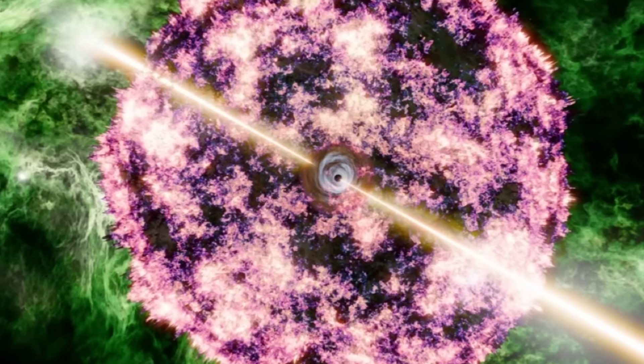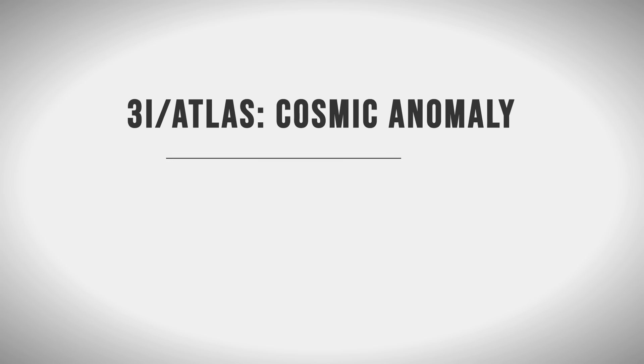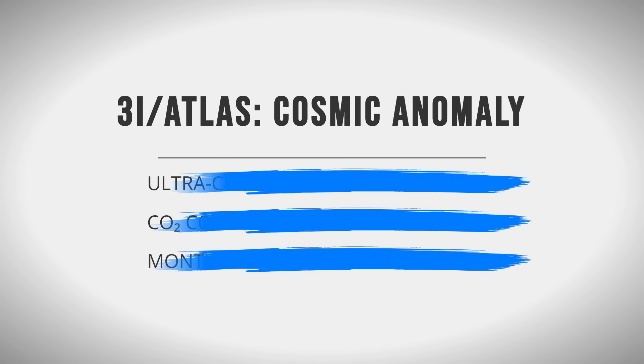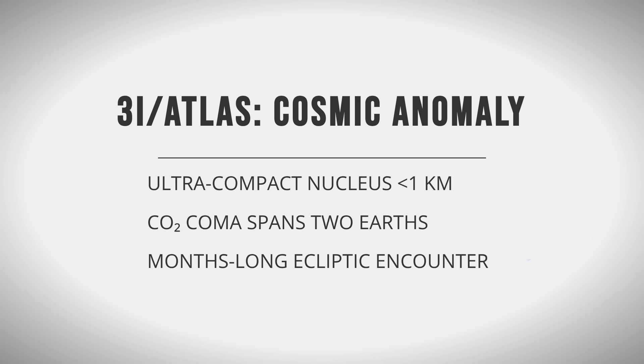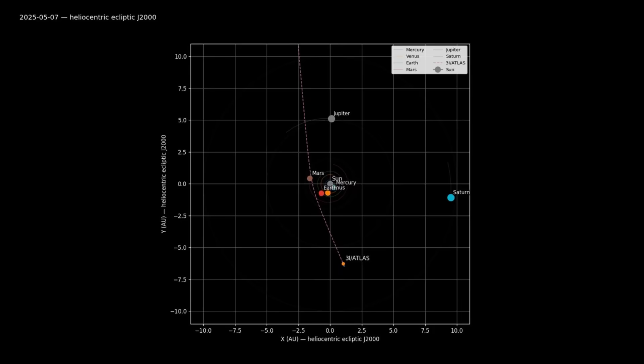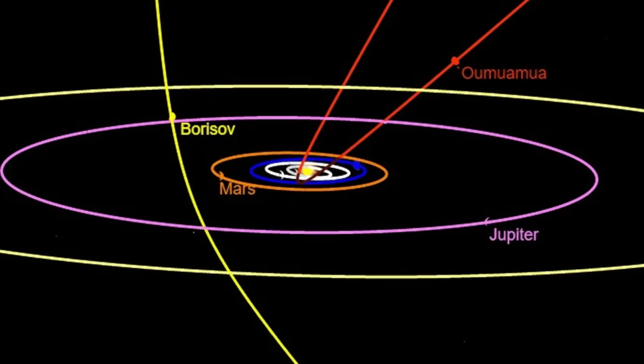But here's what has scientists stunned. Its comet core is less than a kilometer wide, surrounded by a colossal carbon dioxide coma stretching twice the size of Earth, and its low inclination path means it will interact with our solar system far longer and more directly than any interstellar visitor before it.